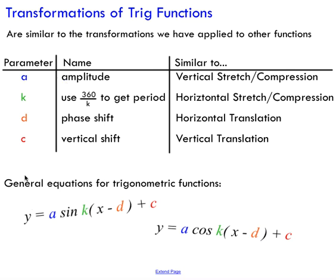Below this chart, I've got the general equations for a transformed trig function for both sine and cos. You can see that there are four parameters inside both of these expressions. I'm going to go over what each of those parameters does, and compare them to the transformations that you should already know.